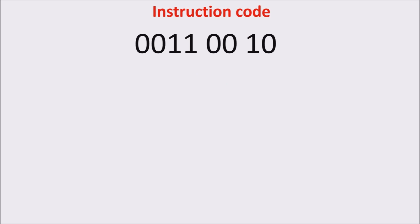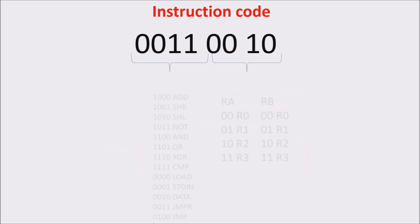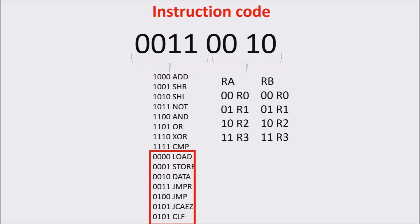An instruction code is a group of bits that instruct the computer to perform a specific operation. An instruction can be divided into two parts: the first part is called OP code, and the second one address code, because it generally defines the addresses in which you can find operands or data. In Scott's CPU we select one of our four registers. We have a four-bit OP code, which can have a maximum of 16 different combinations or kinds of instructions. In Scott's CPU we have 15 different kinds of instructions. We already saw the eight ALU instructions, and now we add the NOT ALU instructions to our set.